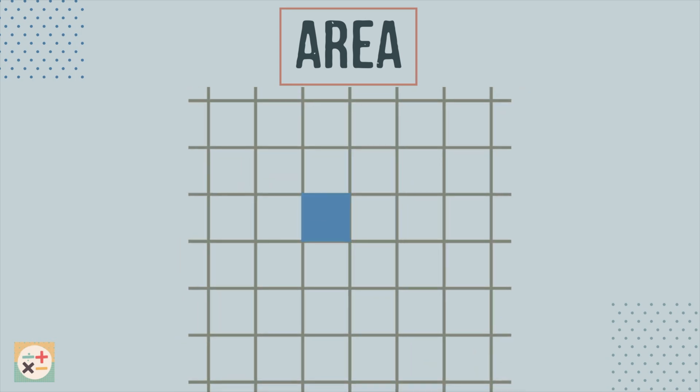Here is a square which takes up 1 square centimeter of space. Square centimeters are one of the ways in which we can measure the area of a shape, usually when the area is small. Bigger areas are often measured in square meters.